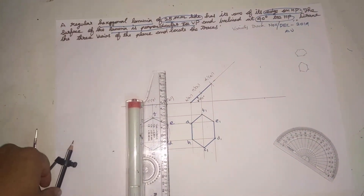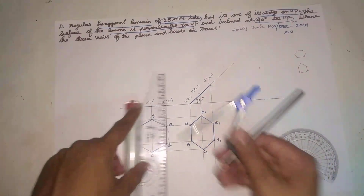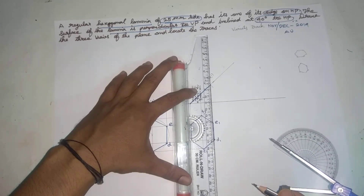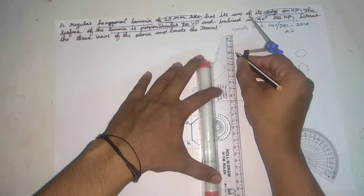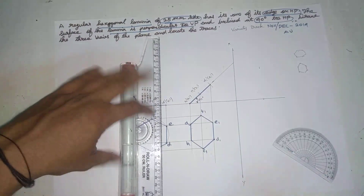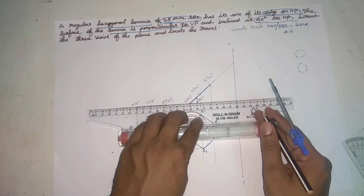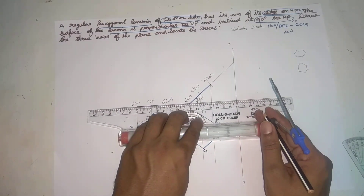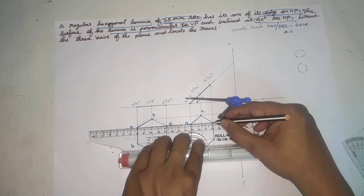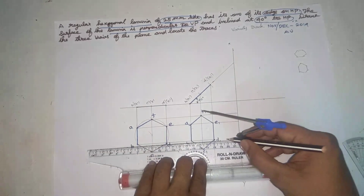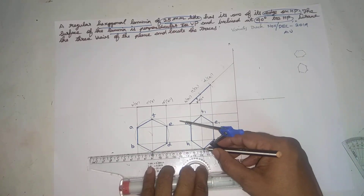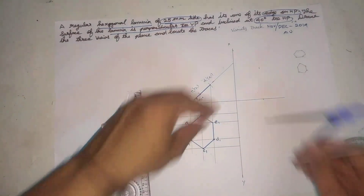Draw the three views of the plane. This is the front view, top view, front view, top view. This is the left-hand side view and the right-hand side view. If we do this, we can take the XY line — this is X and Y. This is the F point, the ED point, the F point, B-D point, A-E point, and this is C point. How to do this — it equals r.